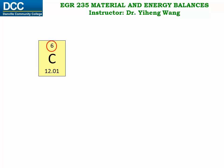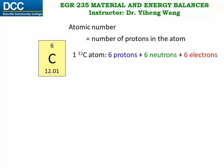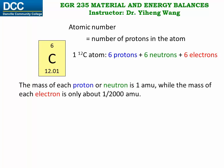This number here is the atomic number, which indicates how many protons there are in this atom. So one carbon-12 atom has six protons, and it also has six neutrons and six electrons. The mass of each proton or neutron is 1 amu, which is the unified atomic mass unit. But the mass of each electron is only about one two-thousandth of a proton, essentially negligible. Therefore the mass of one atom is only determined by the number of protons and neutrons it has.